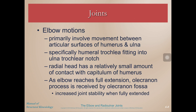Even though there are two joints due to the three bones, elbow movements primarily involve movement between the humerus and the ulna, since the ulna is larger with more articular surface. The specific structure is the trochlea fitting into the ulnar trochlear notch. The radial head has relatively small contact with the capitulum of the humerus. As the elbow reaches full extension, the olecranon process is received by the olecranon fossa, giving the elbow good joint stability when fully extended.